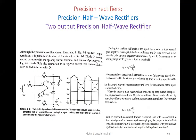Precision rectifiers — we were initially using just diodes, but diodes were not up to the mark. So we thought to combine diodes with op-amps to get proper outputs, hence the term 'precision.' This is done for both half-wave rectifying and full-wave rectification. For full wave, rectification happens for both the positive and negative sides of the waveform.